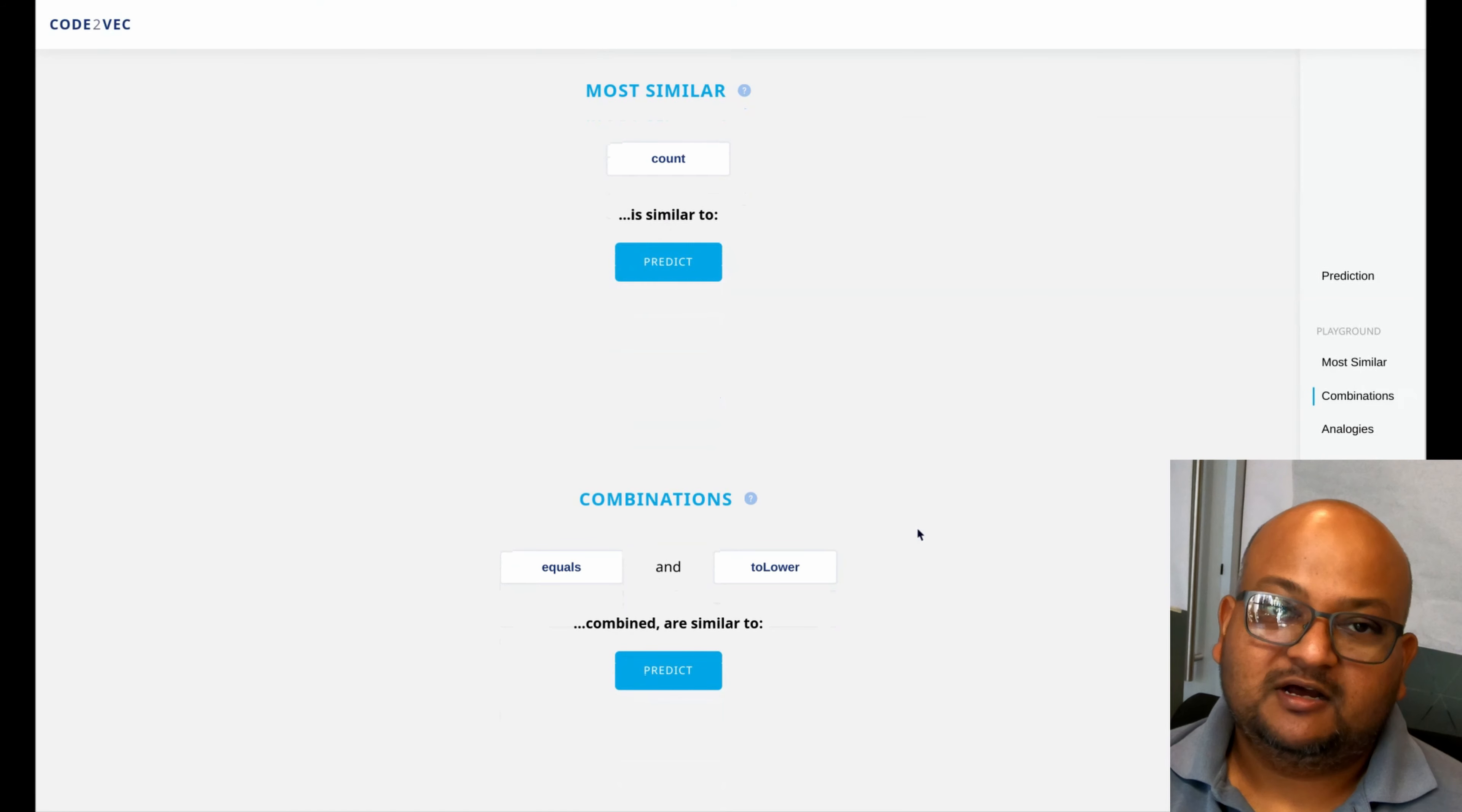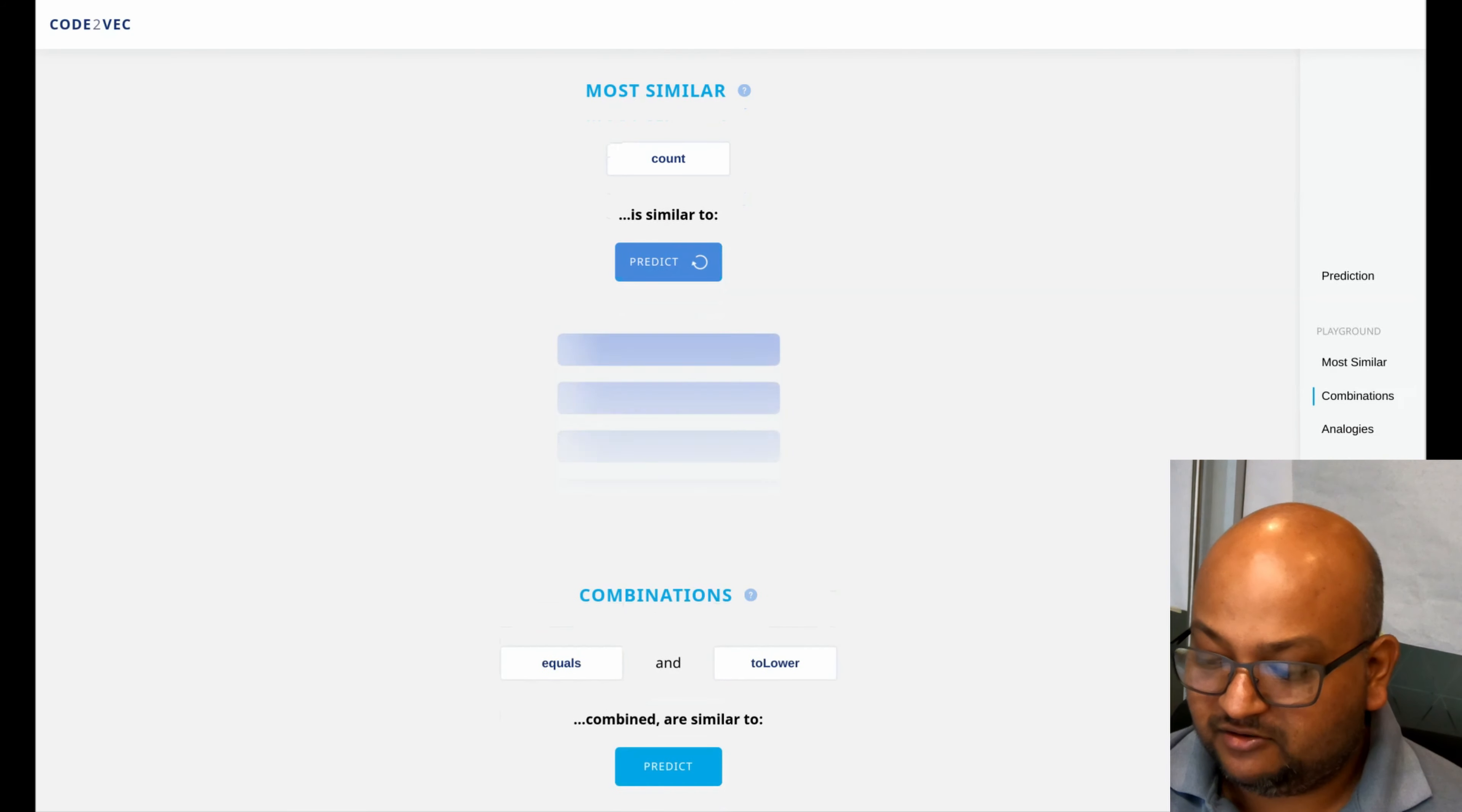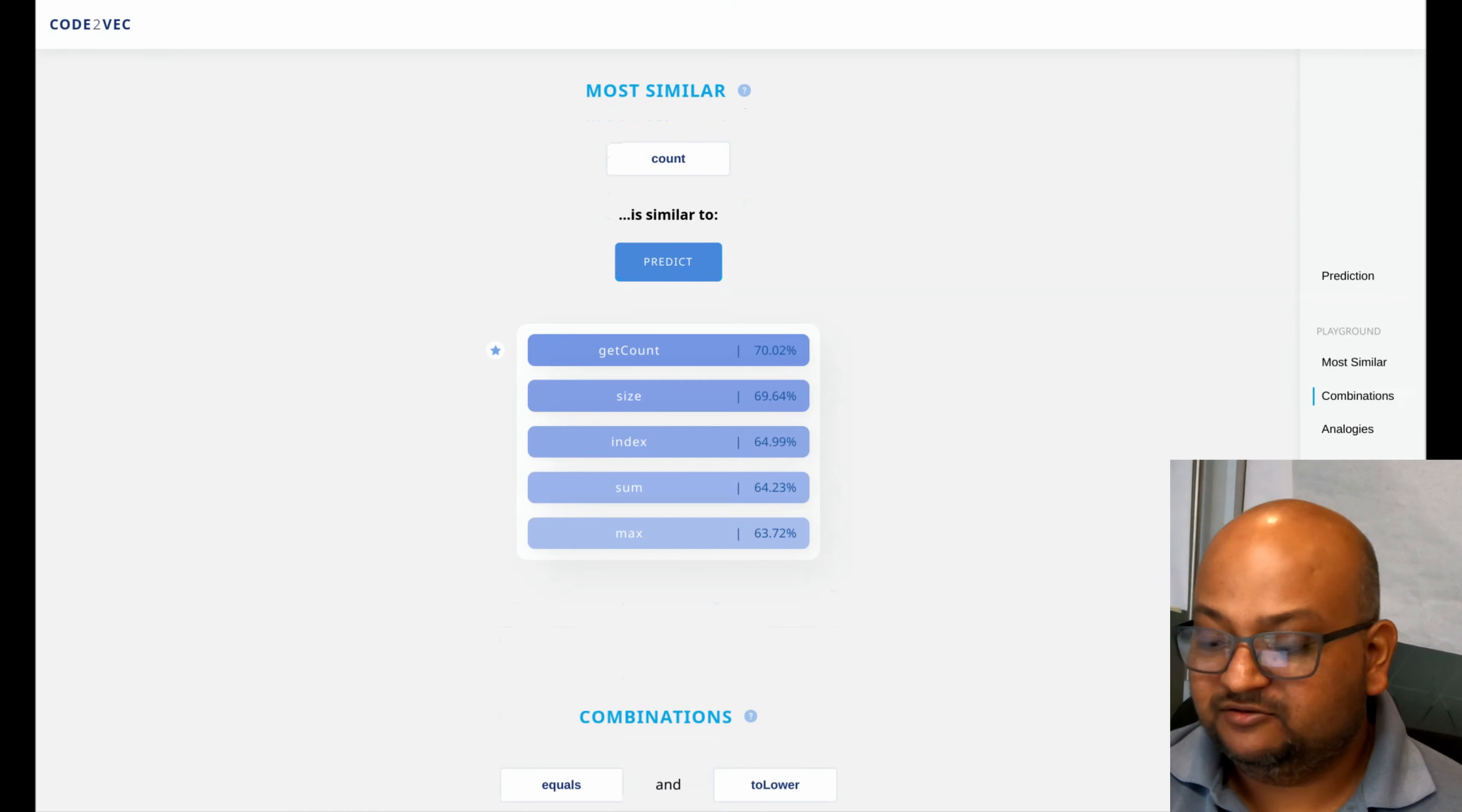You can also look up methods that are similar to a given one. So the example they have here is count which is similar to others that do similar things like size or index or sum.